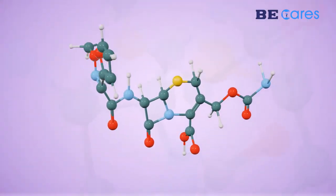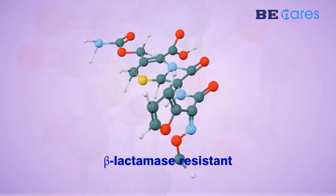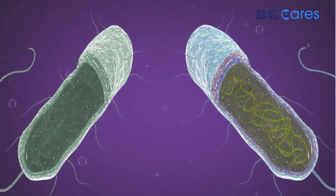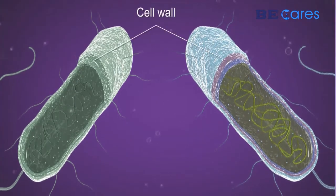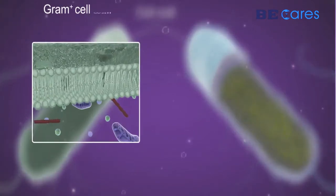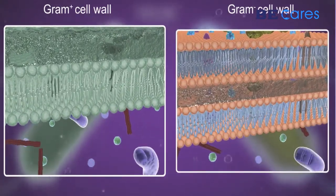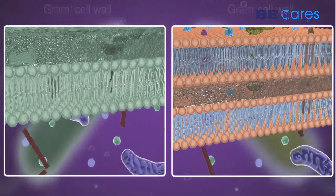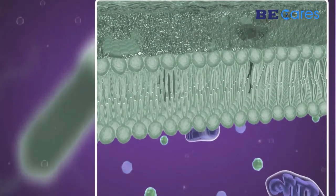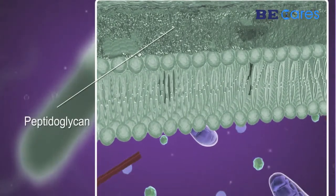Cefuroxime is a cephalosporin that is beta-lactamase resistant. It works by preventing the synthesis of the bacterial cell wall by inhibiting the last step in peptidoglycan synthesis in both gram-positive and gram-negative bacteria.